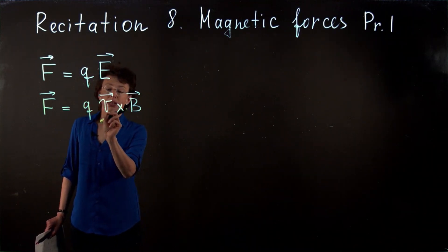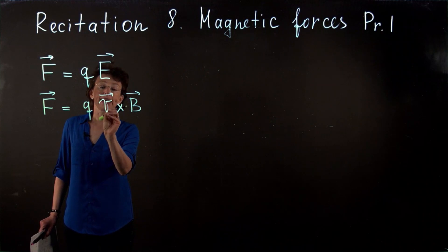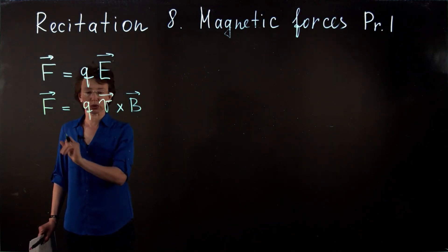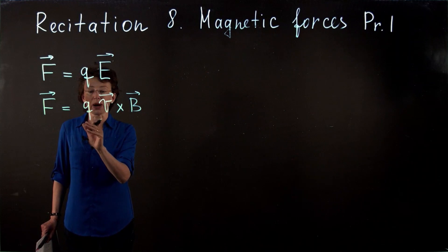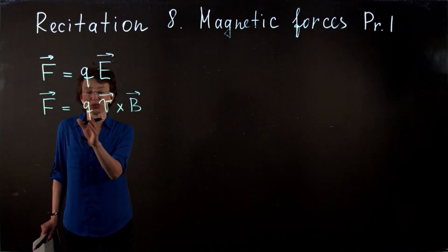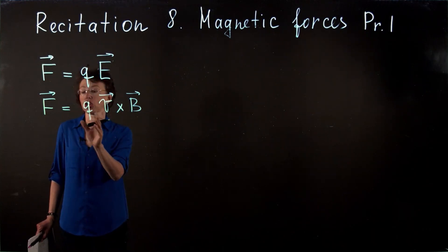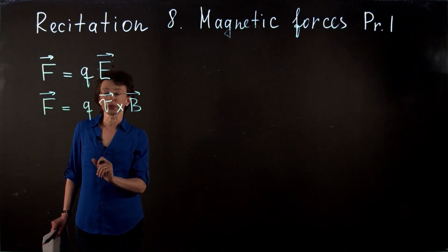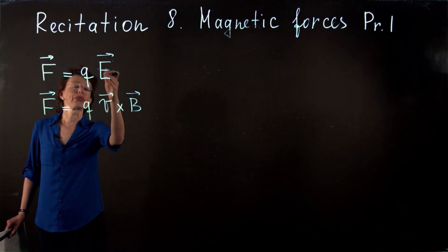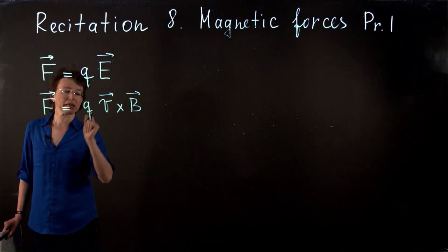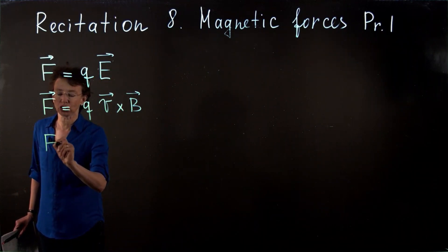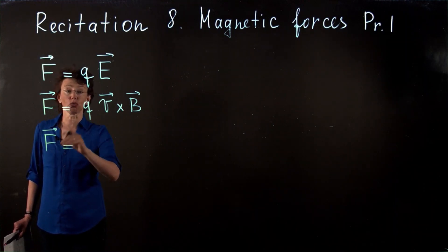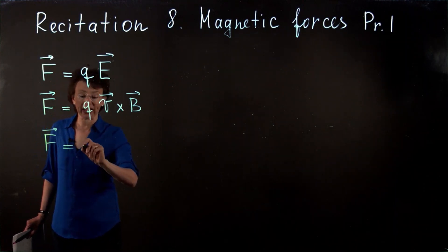If this particle has zero velocity — if it does not move — then the force will be zero. Or if the particle is neutral, if it does not have a charge, then the force will also be zero. So if we have both electric and magnetic fields created in some region of space, then we have to add these two forces as vectors.